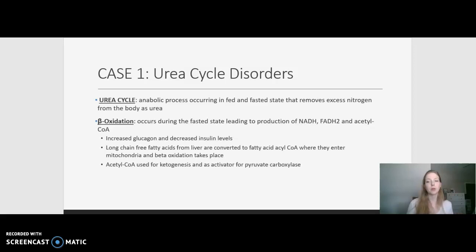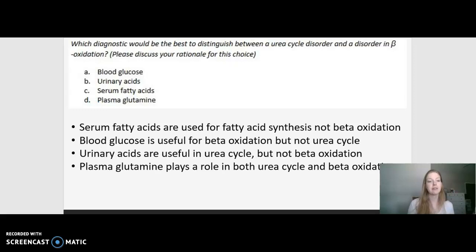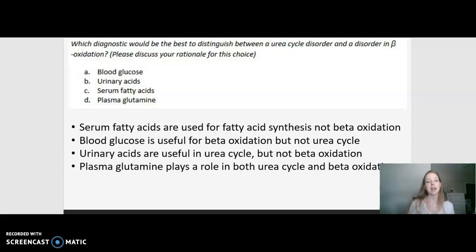Now let's dive into our first case. Which diagnostic test would be best for distinguishing between a disorder in the urea cycle versus a disorder in beta-oxidation? Our options are: A, blood glucose; B, urinary acid; C, serum fatty acids; or D, plasma glutamine. The prompt describes a newborn girl who developed lethargy, hypothermia, and apnea within the first 24 hours of birth, and lab results were drawn to determine which metabolic disorder she had.